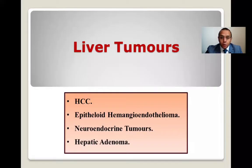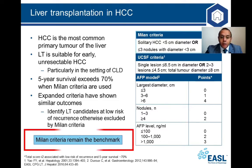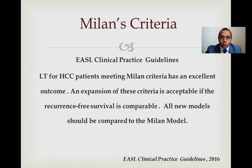First, liver tumors. Liver transplantation in hepatocellular carcinoma (HCC) — the most common primary tumor of the liver. Milan criteria remain the benchmark for patient selection for liver transplantation. EASL clinical practice guidelines in 2016 state that liver transplantation for HCC patients meeting the Milan criteria has an excellent outcome, and expansion of these criteria is acceptable if recurrence-free survival is comparable. All new models should be compared to Milan criteria.